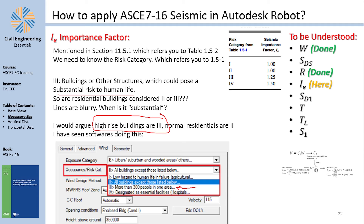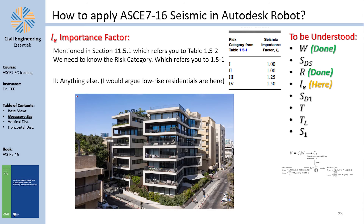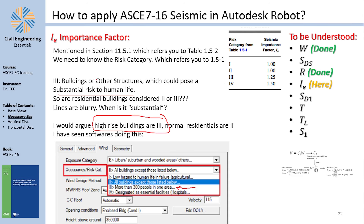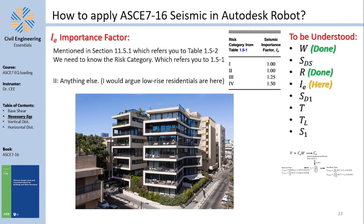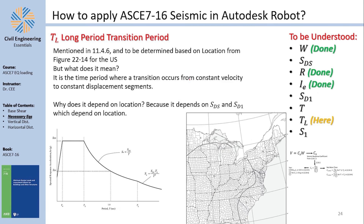Risk Category II is essentially everything else — the default category. Low-rise non-essential buildings generally fall here.